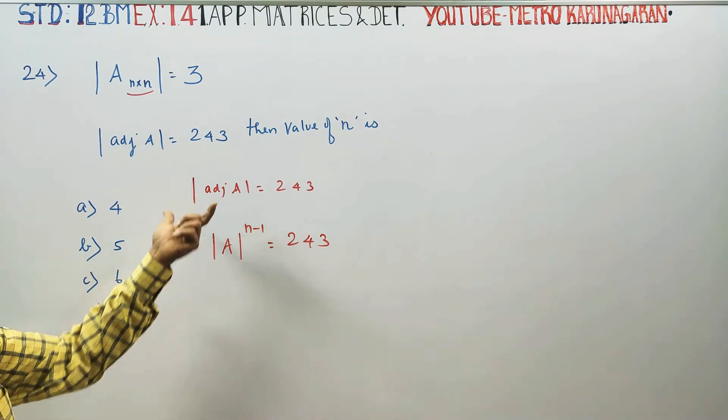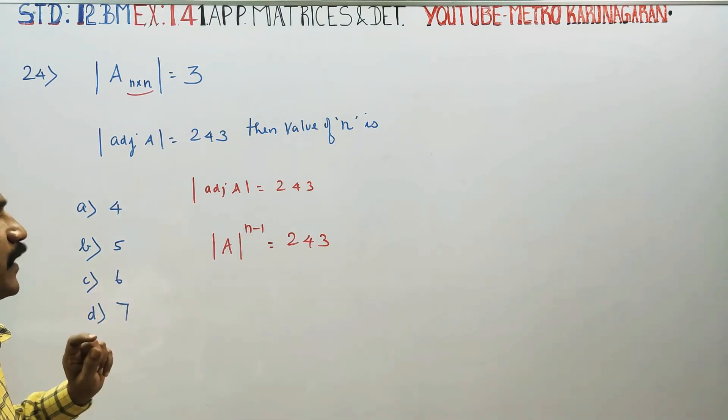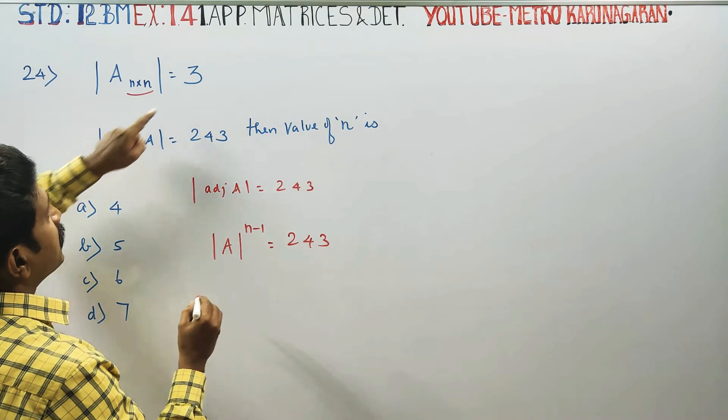Adjoint A, determinant of adjoint A, and determinant of A to the power n-1 - this is the formula. From this equation, we find that determinant of A equals 3.